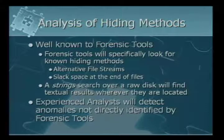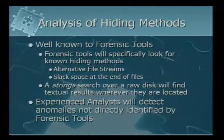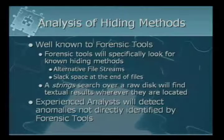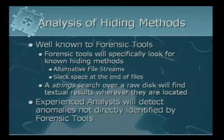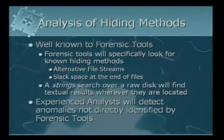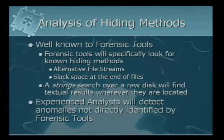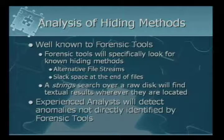It's important to think about which method to use. Forensic tools know about many of these methods — alternate file streams, slack space at the end of files — and they will flag the data. If you run a strings or signature search across a whole hard drive, you're going to find the data if you know what to look for, no matter where it is. You can get around that with encryption or obfuscation, but experienced analysts are going to find stuff beyond what tools give them, as long as they have the time and money available. Fortunately for us, they usually don't have the time available.